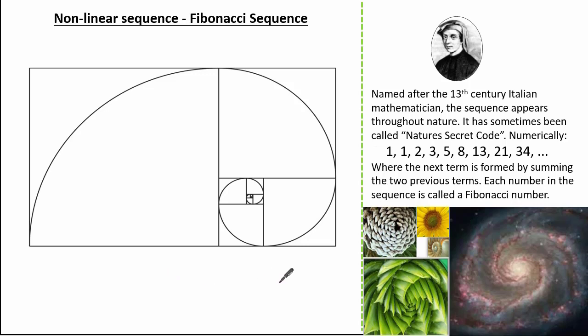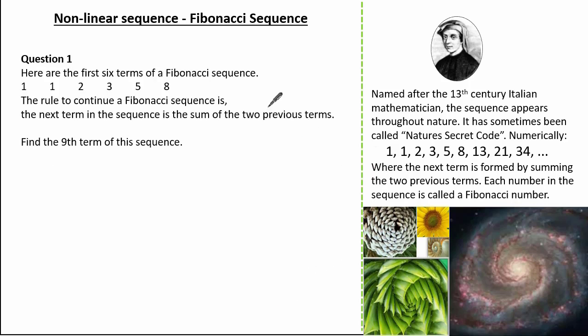So now we know Fibonacci's sequence as a set of numbers, and we also know it as a picture. Let's have a look at some exam questions. In this question it gives us the first 6 terms of Fibonacci's sequence, and it states that the rule to continue a Fibonacci sequence is the next term in the sequence is the sum of the two previous terms. We're asked to find the 9th term in the sequence.